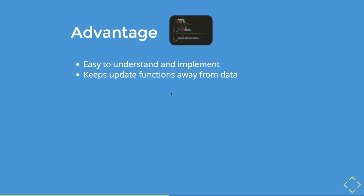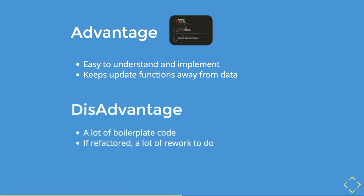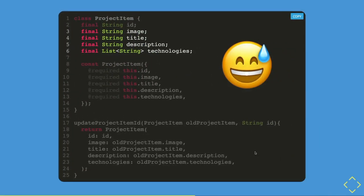This implementation is easier to understand and keeps update functions away from the data or model class, giving you separation of concerns. However, it involves a lot of boilerplate code and requires a lot of rework if you refactor. I only implemented the ID property and there are four more properties that need to be updated — yikes. Still, this implementation can be good for some cases.